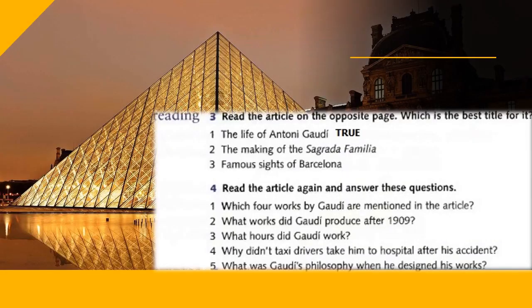Which is the best title for the text on the previous slide? The answer is 'The Life of Anthony Gaudi,' since the text tells us about a biography of a famous architect in Barcelona named Anthony Gaudi. So it tells us about Anthony Gaudi's historical life.